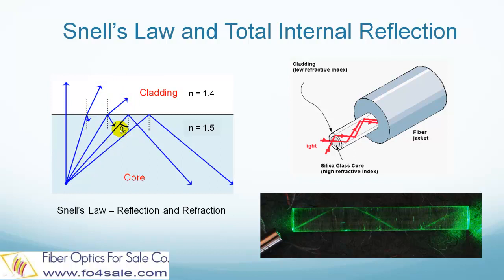But when we increase the incident angle to greater than the critical angle θc, no more light enters into the cladding. All light is reflected back into the core. This phenomenon is called total internal reflection.